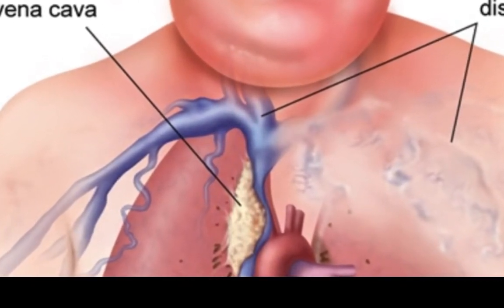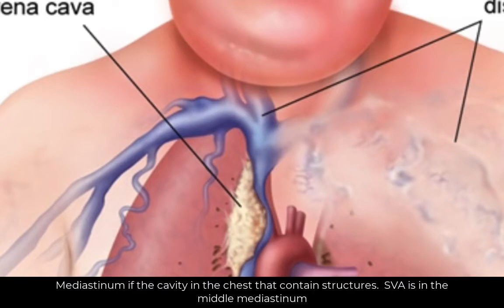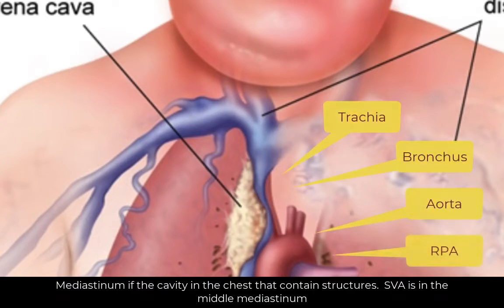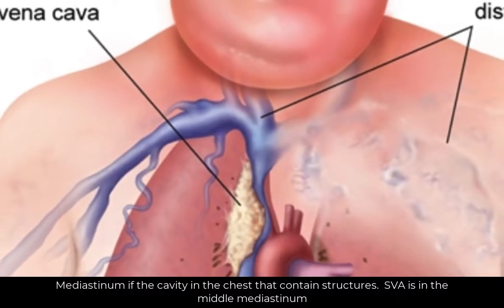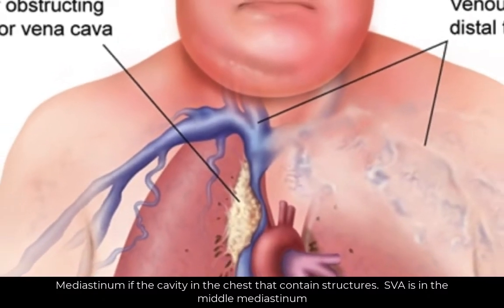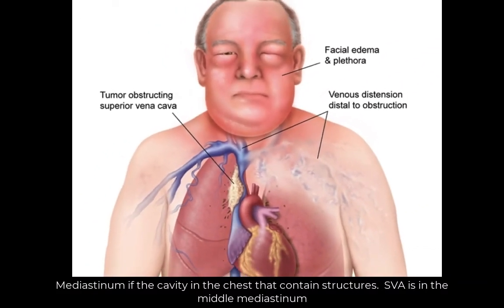In its course, the superior vena cava is surrounded by mediastinal structures including the trachea, right bronchus, aorta, and right pulmonary artery. It is also close to perihilar and paratracheal lymph nodes.